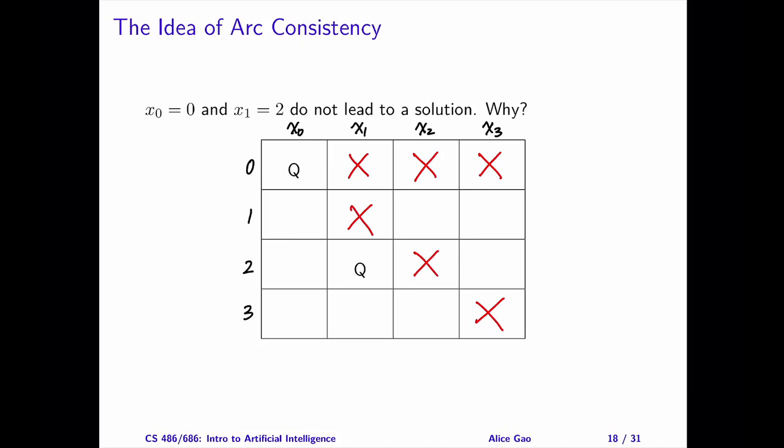Similarly, since queen x1 is in row 2, we cannot put any queen in row 2. And we cannot put any queen in these two diagonals. Now we have a problem. All possible positions for queen x2 have been eliminated. This tells us that putting x1 in row 2 does not lead to a solution.